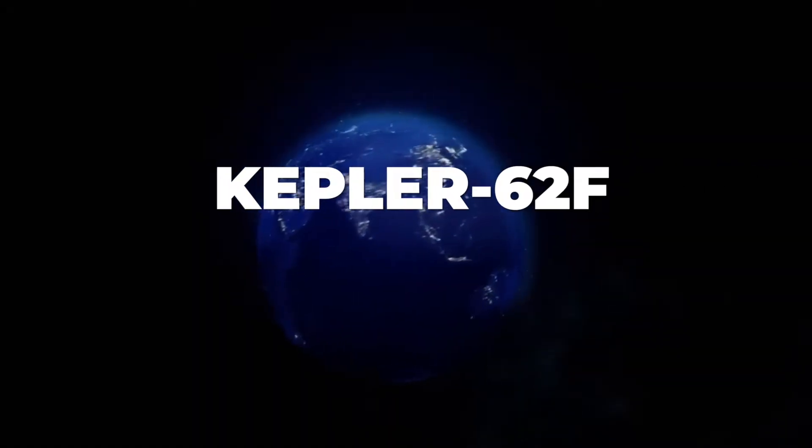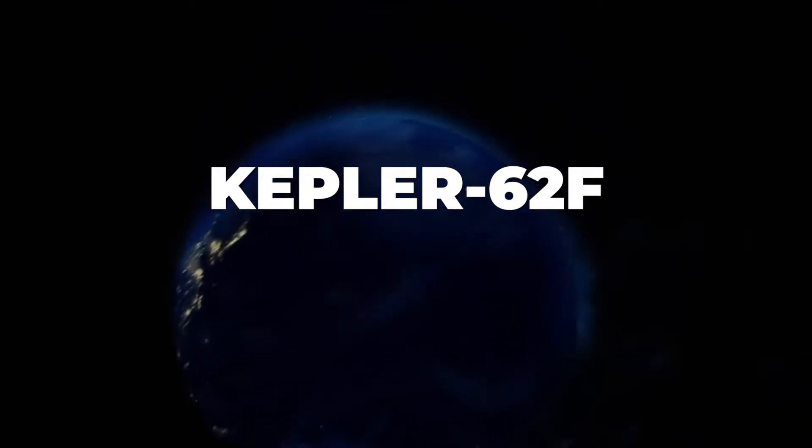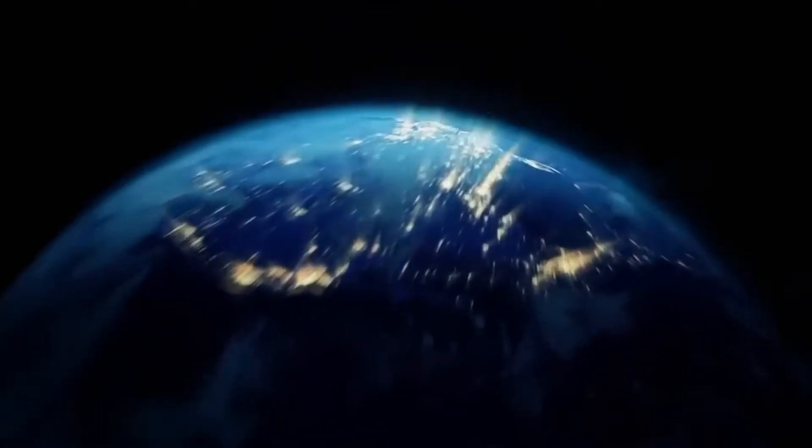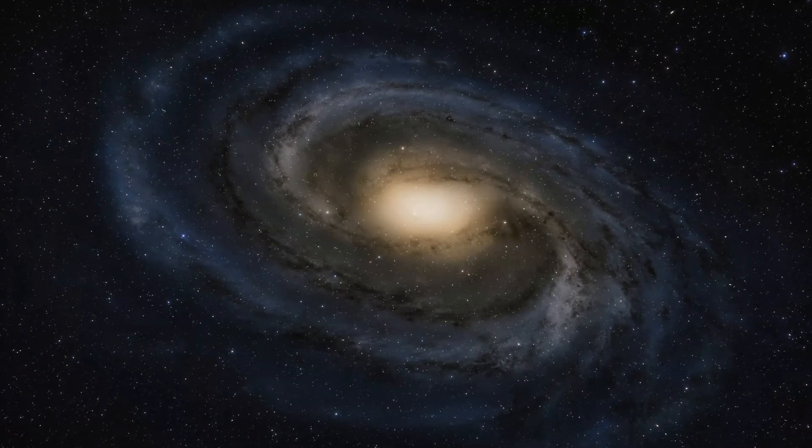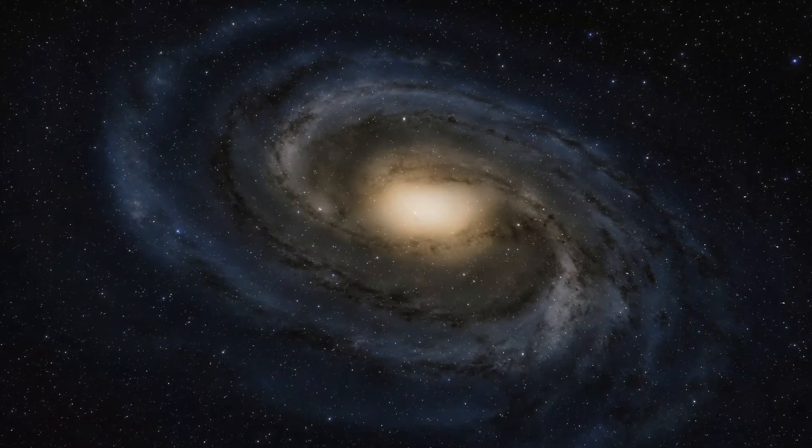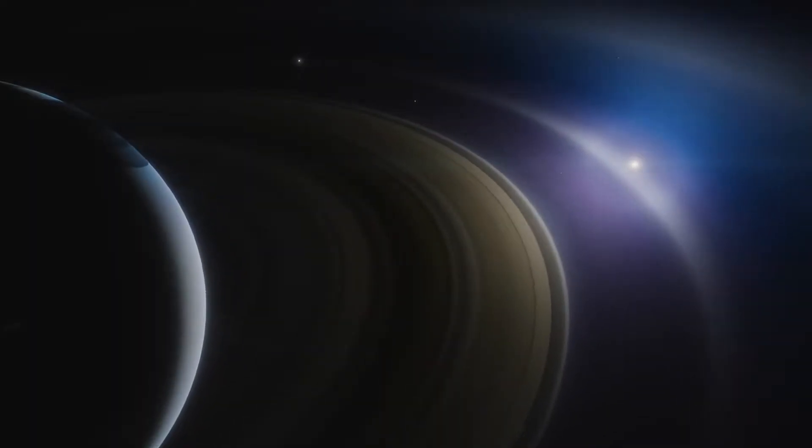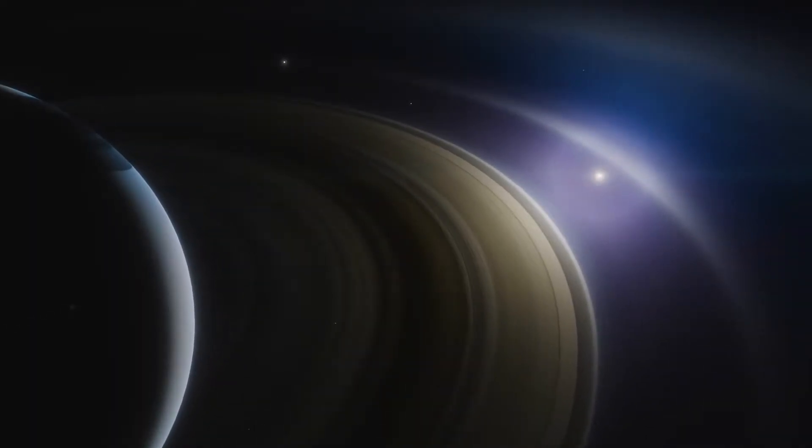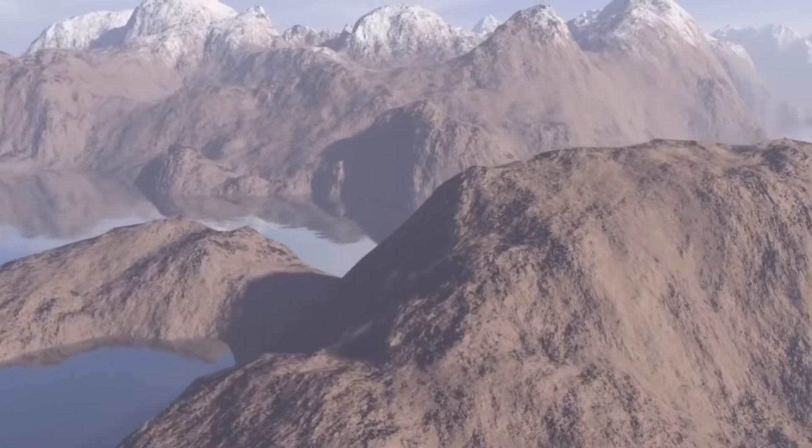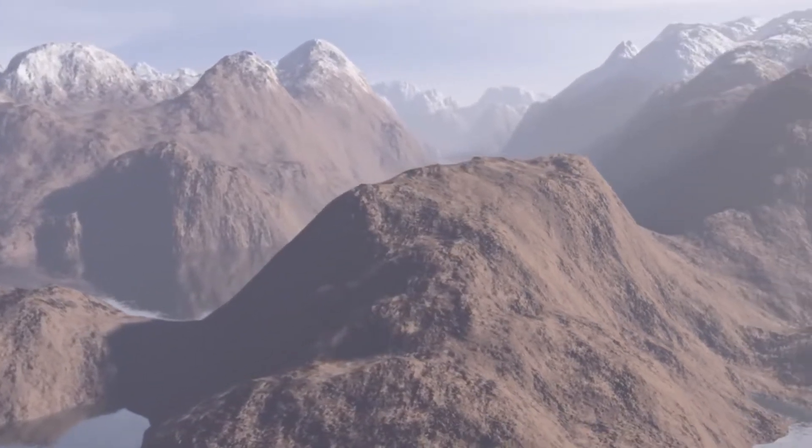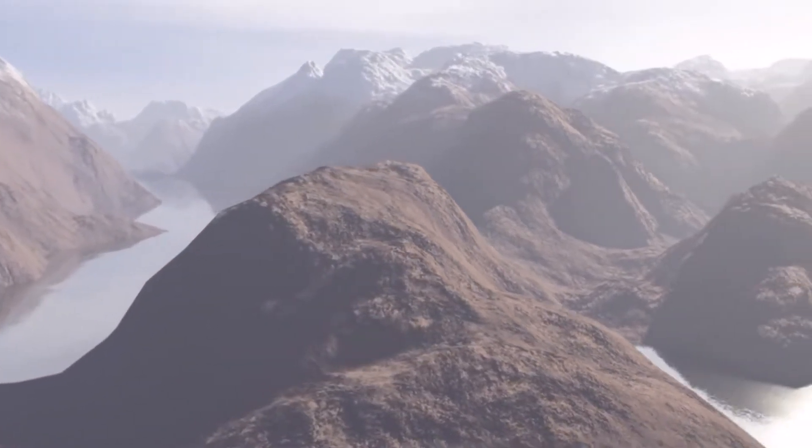Kepler-62f is an exoplanet located in the constellation Lyra, approximately 1200 light years from Earth. Its size is about 40% larger than Earth's. This exoplanet orbits its star Kepler-62 at a distance that puts it in the habitable zone, often called the Goldilocks zone.